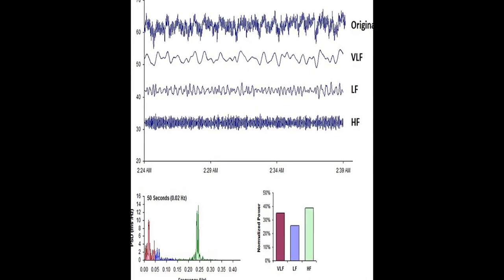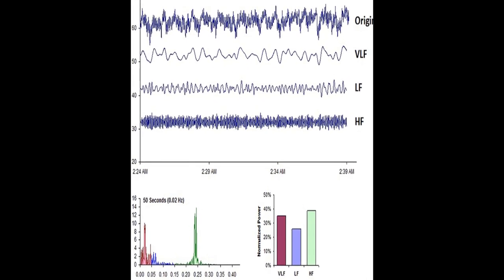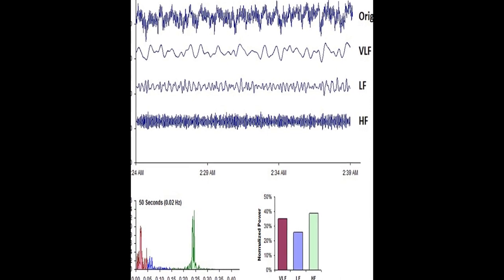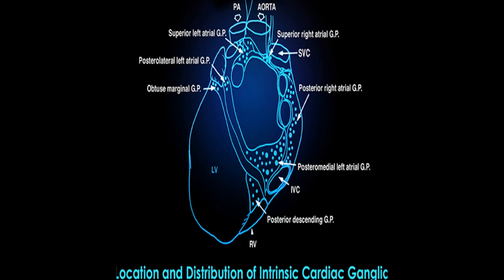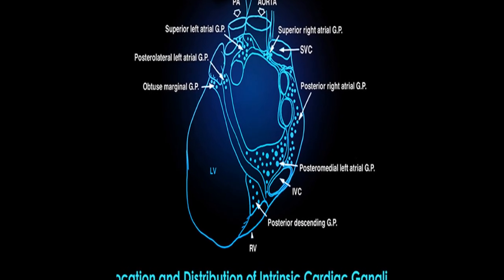Heart Rate Variability, HRV, is an emergent property of interdependent regulatory systems that adapt to challenges and achieve optimal performance.